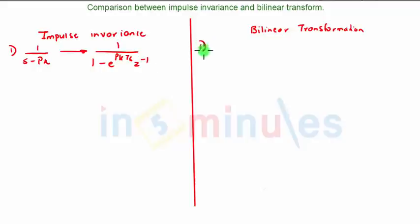In bilinear transformation, poles are transferred using the equation s equals 2 over ts times z minus 1 over z plus 1.